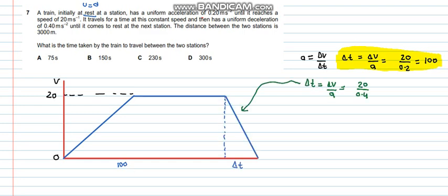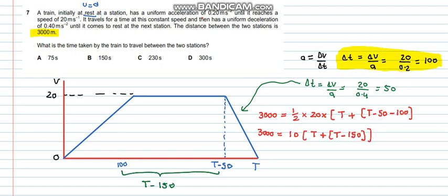Now we can find the change in time for the deceleration part. The change in time is 20 divided by 0.4 which is 50 seconds. So in the next step we can equate it to the area. This is a trapezium. So we can make an equation and set it to 3000 meters which is already given in the question. So we have set up an expression that 3000 equals the area of trapezium which is half into the height is 20 and the sum of parallel sides. One of the sides is the longer side which is t and this side is t minus 50 minus 100, so this becomes t minus 150. Now we can just solve it and find the value of t to find the time taken by the train to travel. Solving it up would give us t equals to 300 seconds which becomes part C.